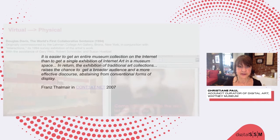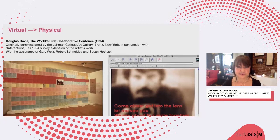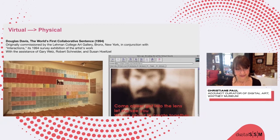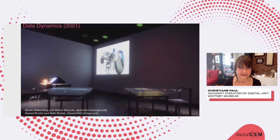Starting with exhibitions of net art in physical space: what you see here is the earliest work of net art in the collection of the Whitney Museum — Douglas Davis's The World's First Collaborative Sentence from 1994. On the left, you see how this work was exhibited at Lehman College's art gallery as a printout of the first contributions to the sentence, which is basically just an HTML form where people can endlessly add to a sentence. So here you simply have a printout.